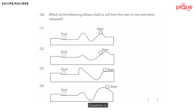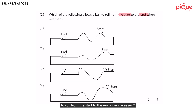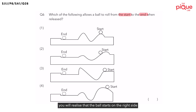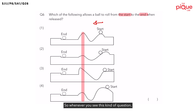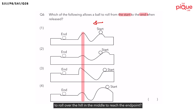Question 6: Which of the following allows a ball to roll from the start to the end when released? When you scan through all the options, you will realize that the ball starts on the right side and needs to roll to the left to reach the end point. And as the ball rolls from right to left, there's a middle hill that the ball needs to roll over. So the question is essentially asking: does the ball have enough energy to roll over the hill in the middle to reach the end point?